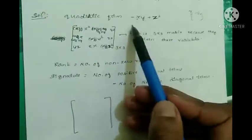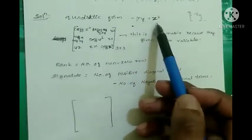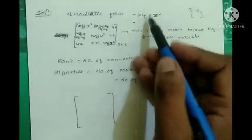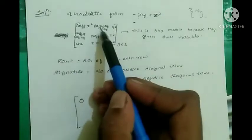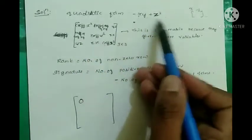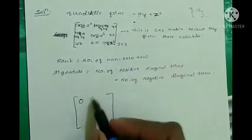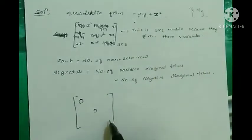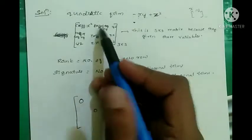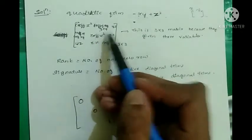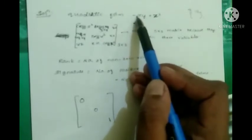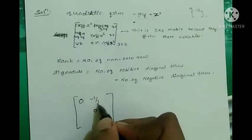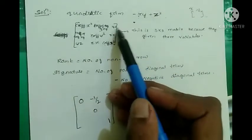Now applying this to our problem: the coefficient of x squared is zero — there is no x squared term. The coefficient of y squared is also zero — no y squared term. The coefficient of z squared is one, so we write one. The coefficient of xy is minus one, so half of minus one gives minus one-half for those off-diagonal positions.